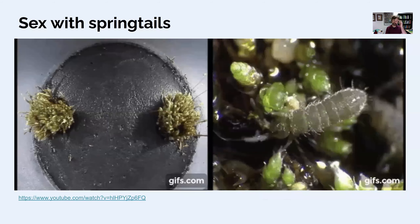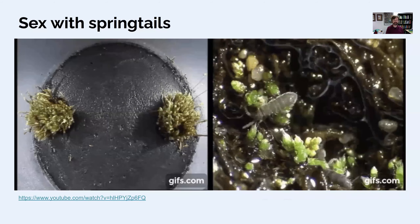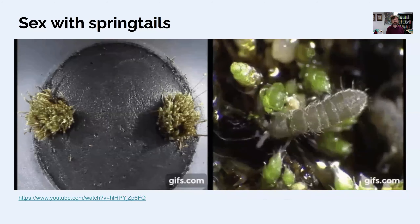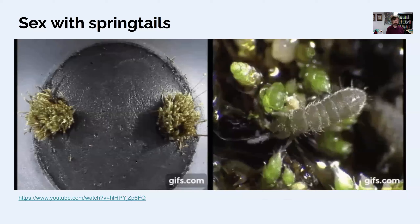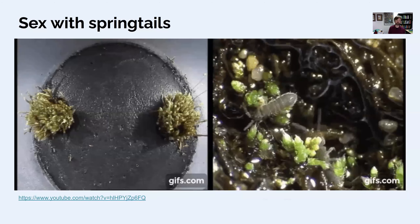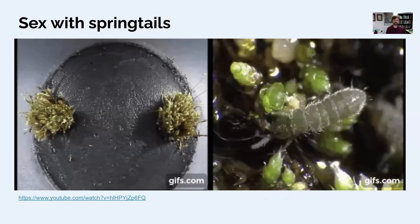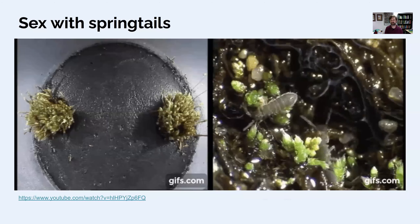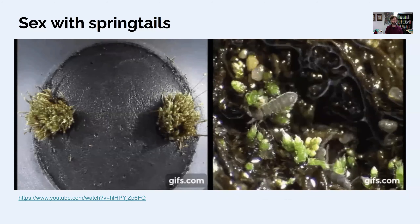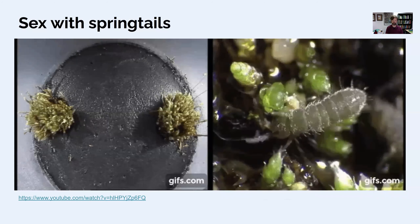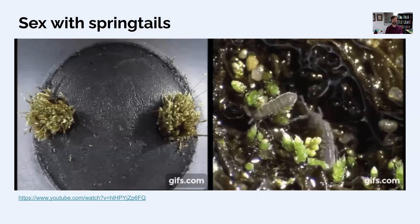Here are videos of the experiment showing moss colonies separated from each other, with those small organisms — springtails — skittering from one side to the next, exploring their environment. The moss takes advantage of their exploratory behavior to disperse sperm, and as the springtails move around, they bring some sperm with them.